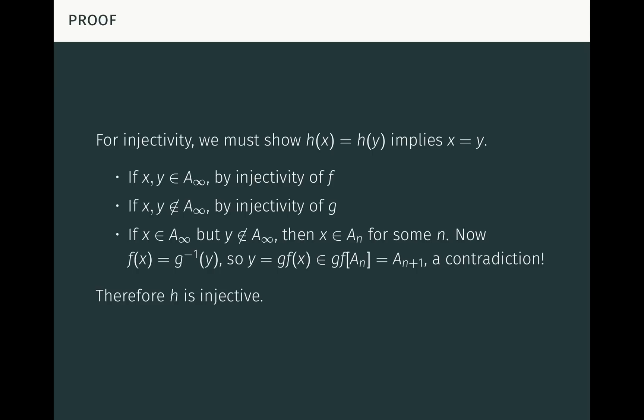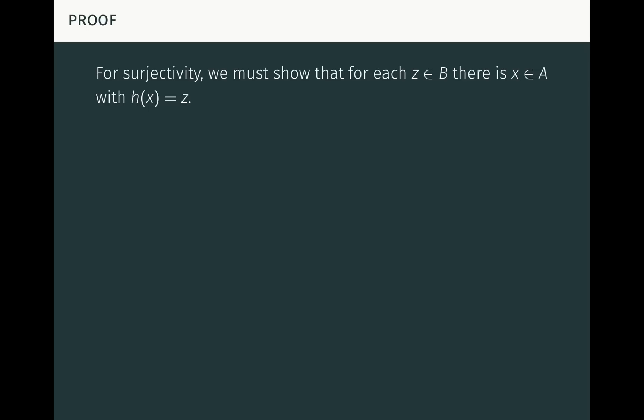For surjectivity, we need to show that for each Z in B, there exists an X in A with H of X equal to Z — in other words, each room has a guest. Start with such a Z and consider X equal to G of Z, which is the original guest occupying that room. If X is not in A_infinity, the guest wasn't displaced, so H of X is G inverse of X, which equals Z, since X equals G of Z. So we get Z back — the room is occupied.